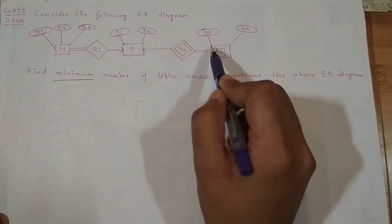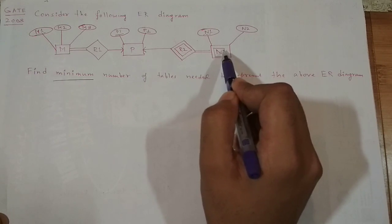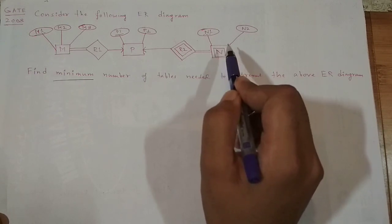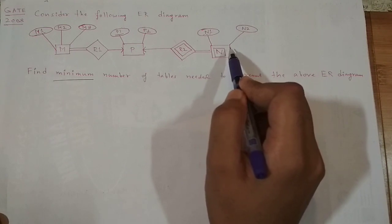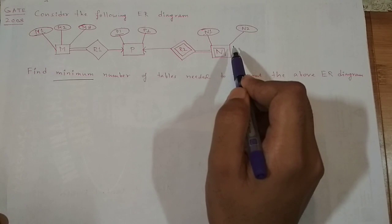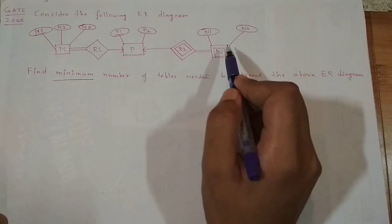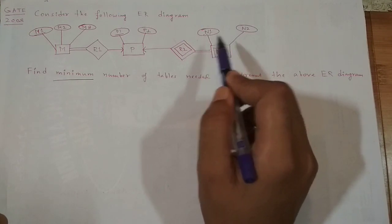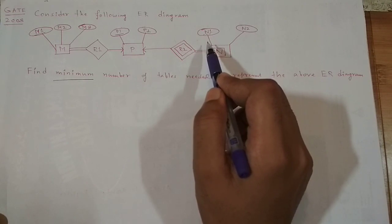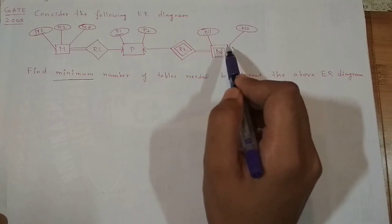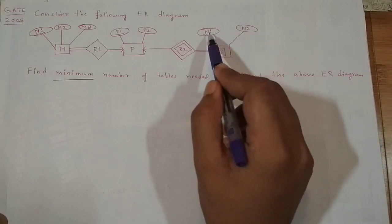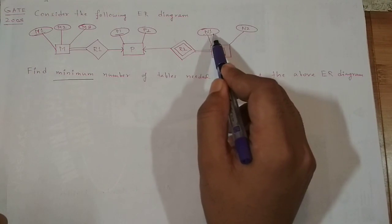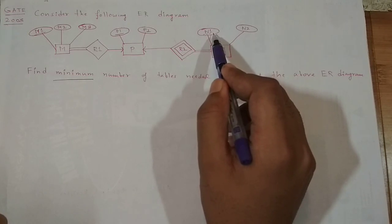When we have a rectangle inside another rectangle, such an entity set is known as a weak entity set. A weak entity is an entity set which depends on a strong entity in order to have its existence in the database. An attribute with dotted underline is known as a partial key.